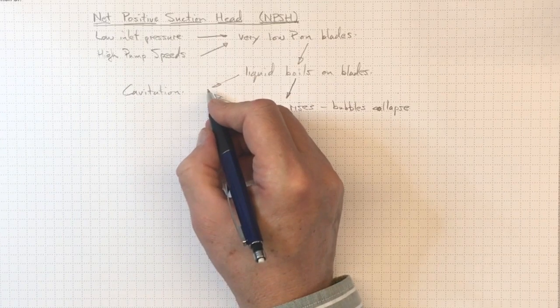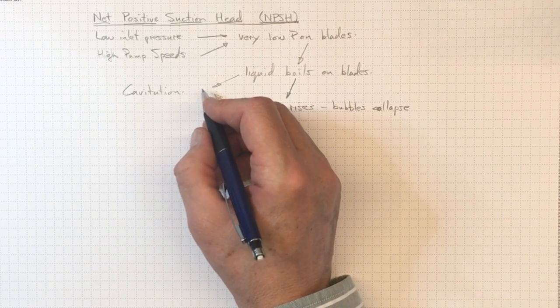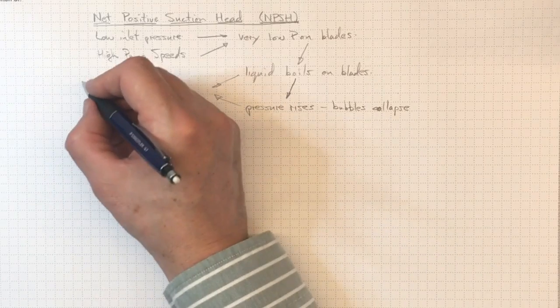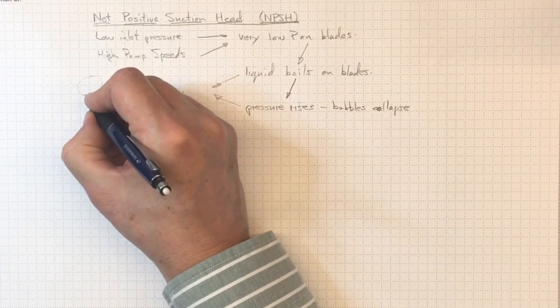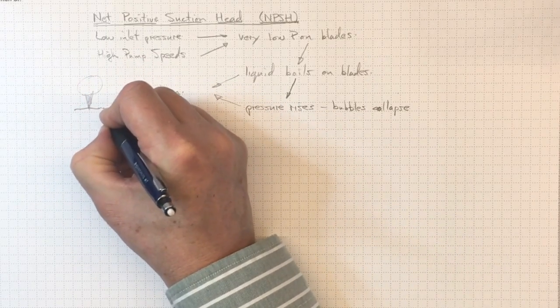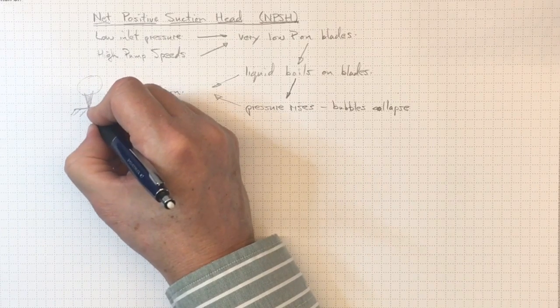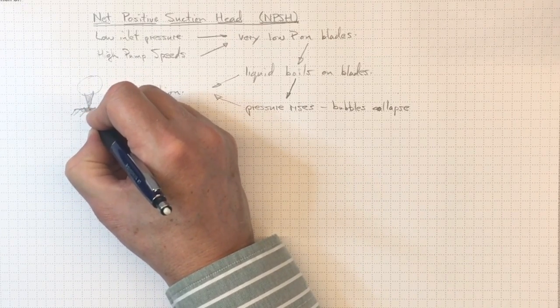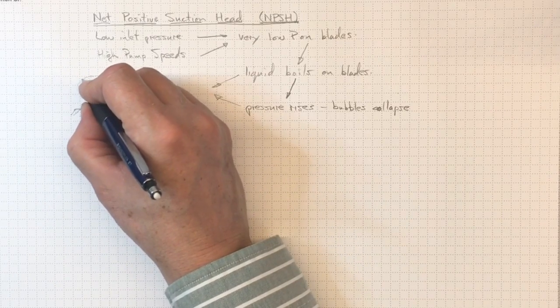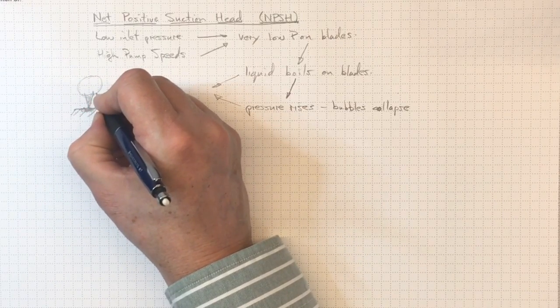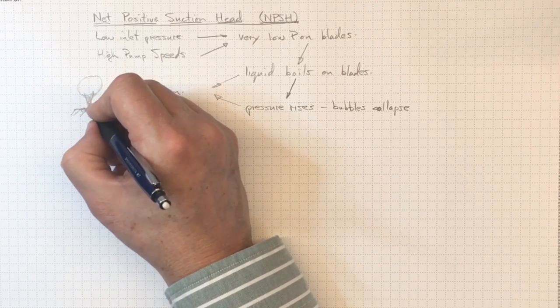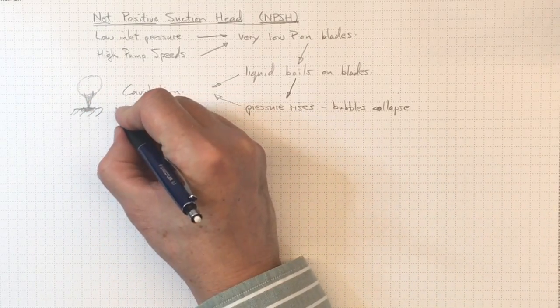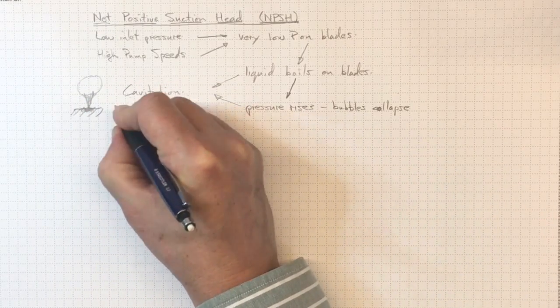It's not the boiling so much that causes the problem, but when those bubbles collapse right next to the blade, a little jet comes down out of the bubble and impacts the blade surface with enormous velocity. That results in damage to the blade and pitting. You can see this in some high speed video that you can find elsewhere on the course website. So that cavitation leads to impeller damage.